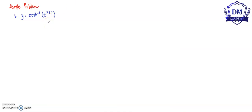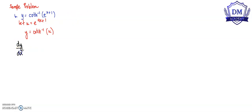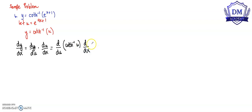Our function of y is equal to the inverse hyperbolic cotangent of e raised to x plus 1. Let u be equal to e raised to x plus 1. Then our function of y is equal to the inverse hyperbolic cotangent of u. Using chain rule, dy over dx equals dy over du times du over dx, which equals d over du of inverse hyperbolic cotangent of u times d over dx of e raised to x plus 1.